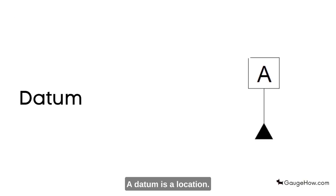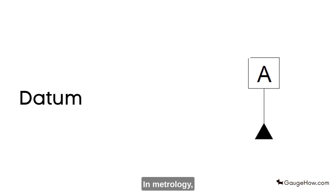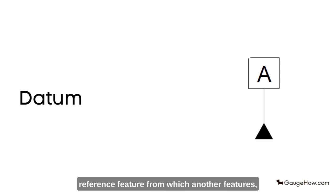Datum: A datum is a location. We use datums as guides to tell others where we are, or as directions on how to get to places. In metrology, a datum is simply an idealized reference feature from which another feature's orientation, position, or other characteristic is defined.